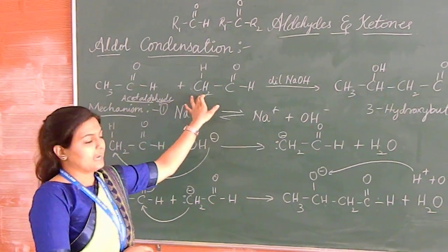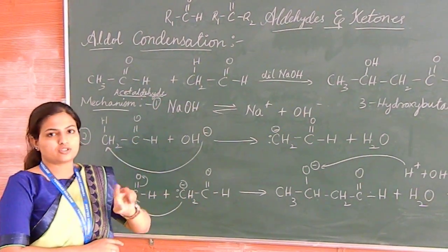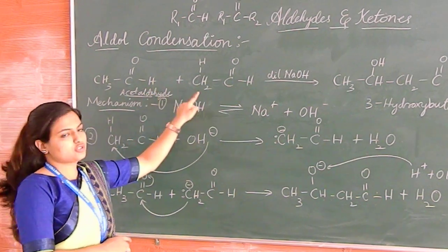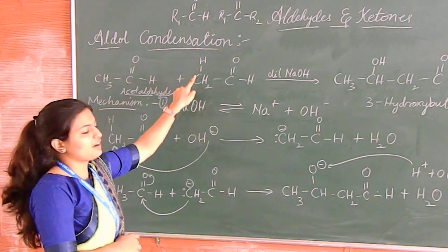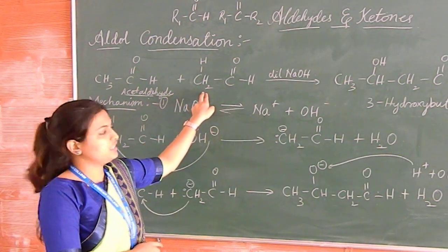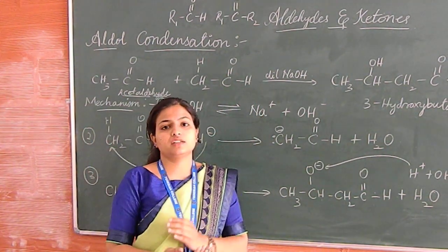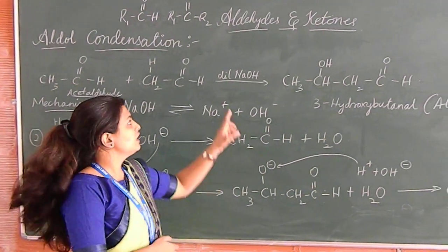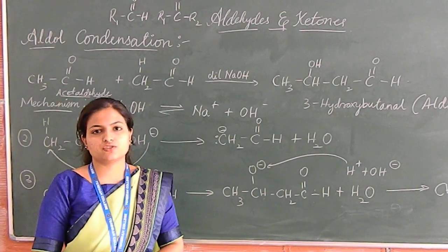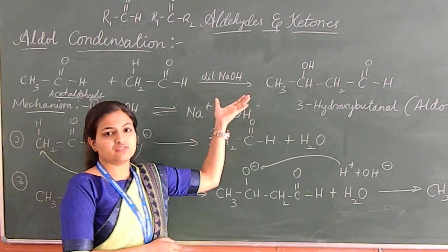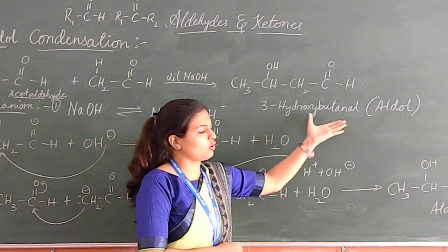Now we have taken aldehyde. We have two units of aldehyde, both having an alpha hydrogen atom, combined with each other in the presence of dilute NaOH. NaOH is a strong base. Instead of NaOH, it can be any strong base. With dilute NaOH, we get the product that is 3-hydroxybutanal, that is an aldol.